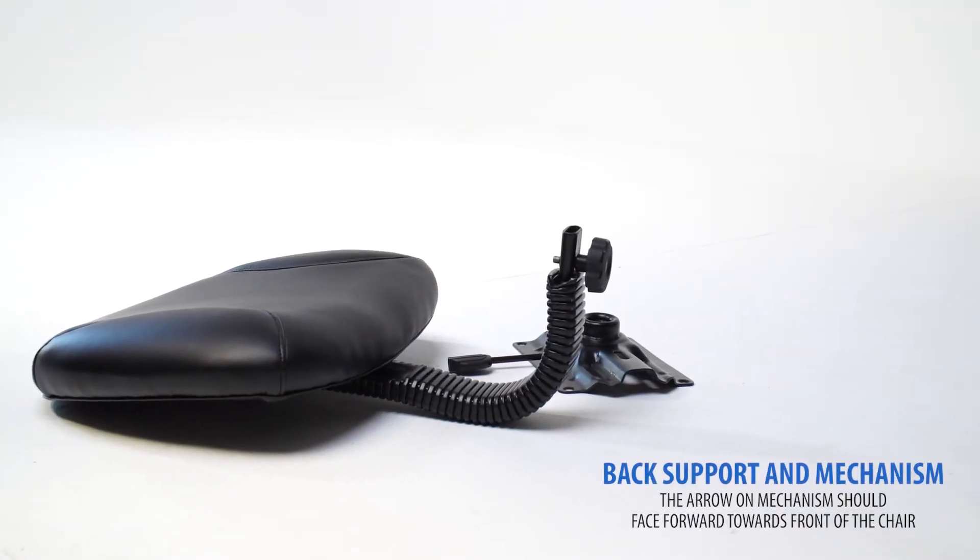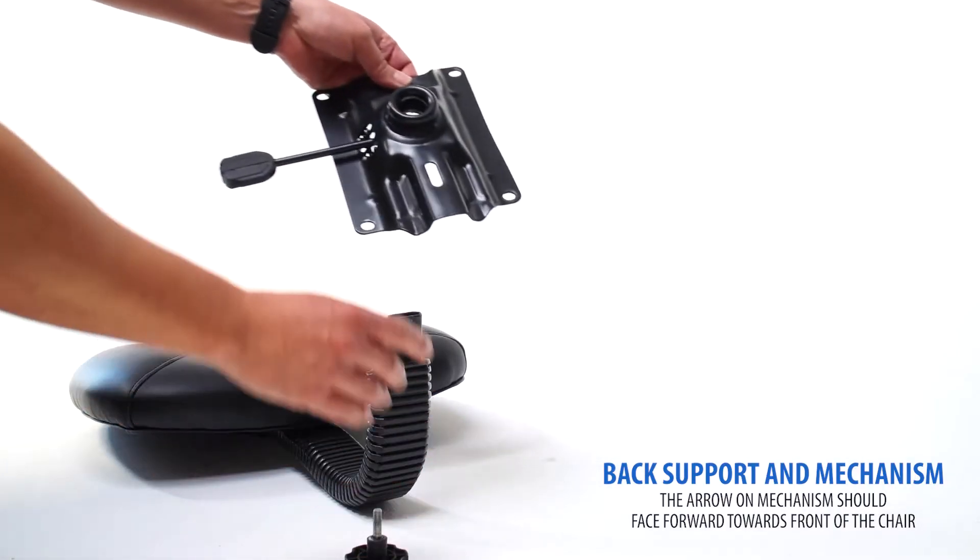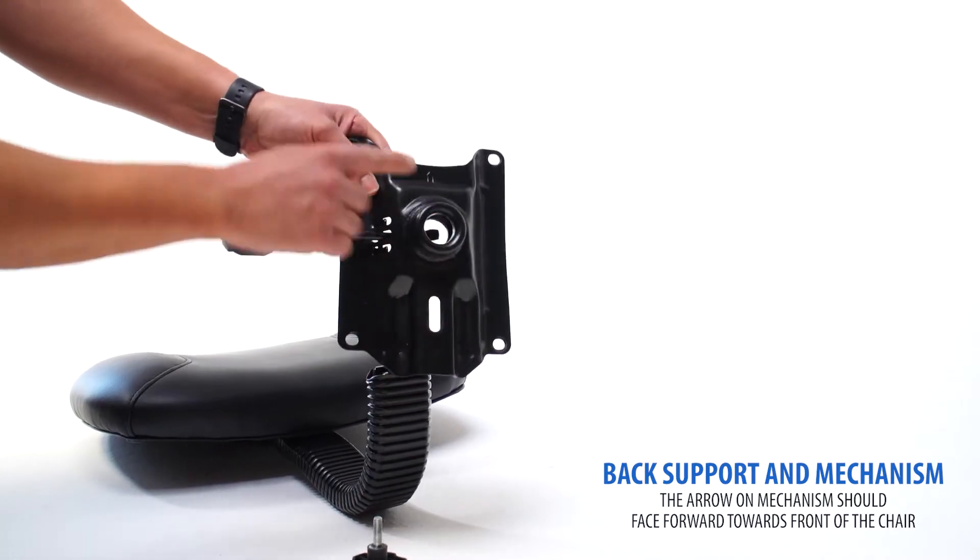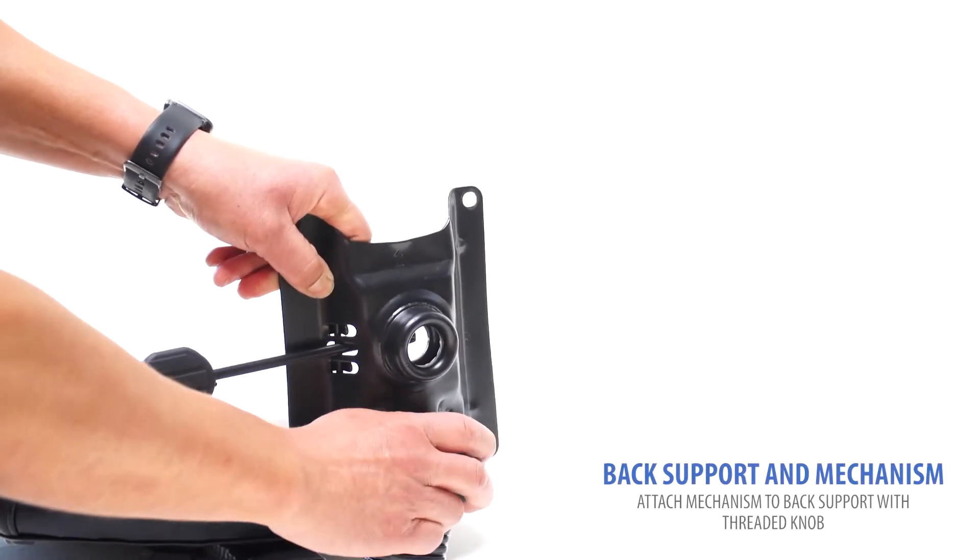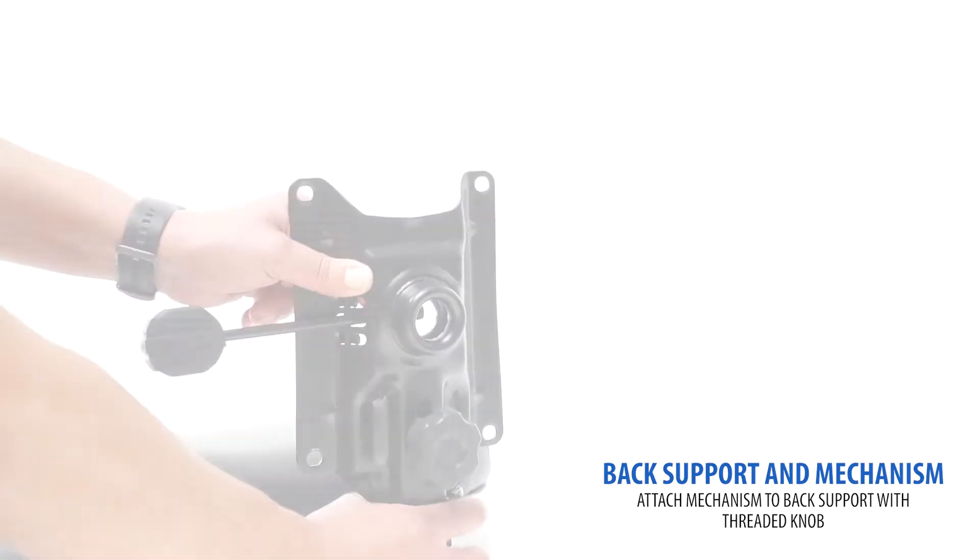Locate the back support and mechanism. The arrow on the mechanism indicates the front of the chair. Connect the mechanism to your back support with the included knob.